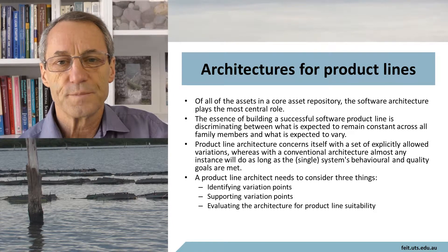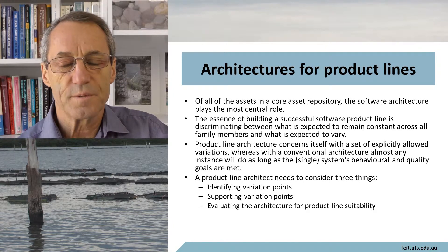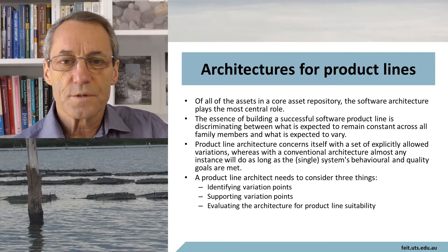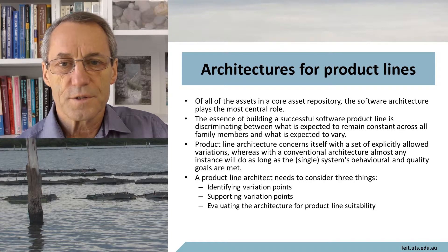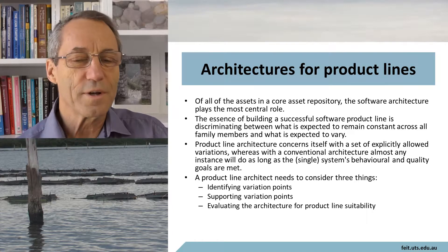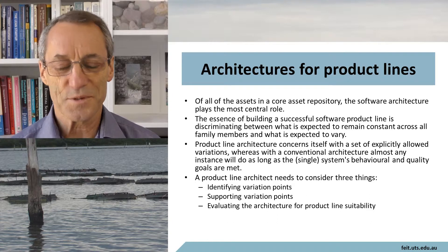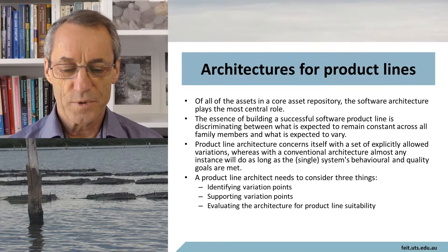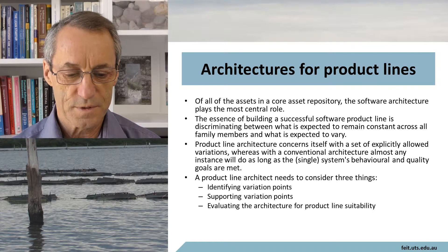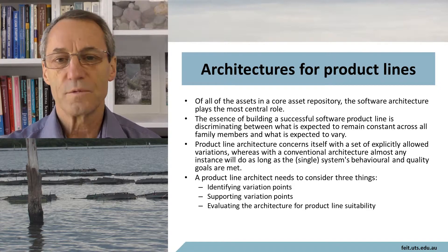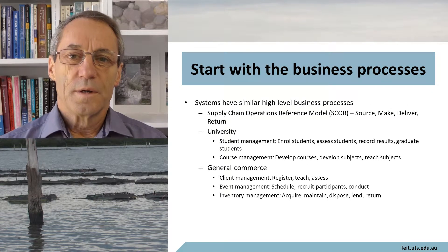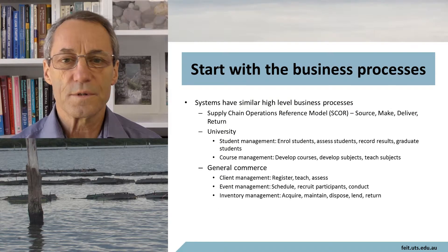The essence of building a successful product line is discriminating between what's expected to remain constant and what's expected to vary. Product line architecture concerns itself with a set of explicitly allowed variations — and the opposite: explicitly disallowed variations. Some things must remain constant and some things do vary. Product line architectures need to do three things: identify the variation points, support the variation points, and evaluate the product line architecture for its suitability.